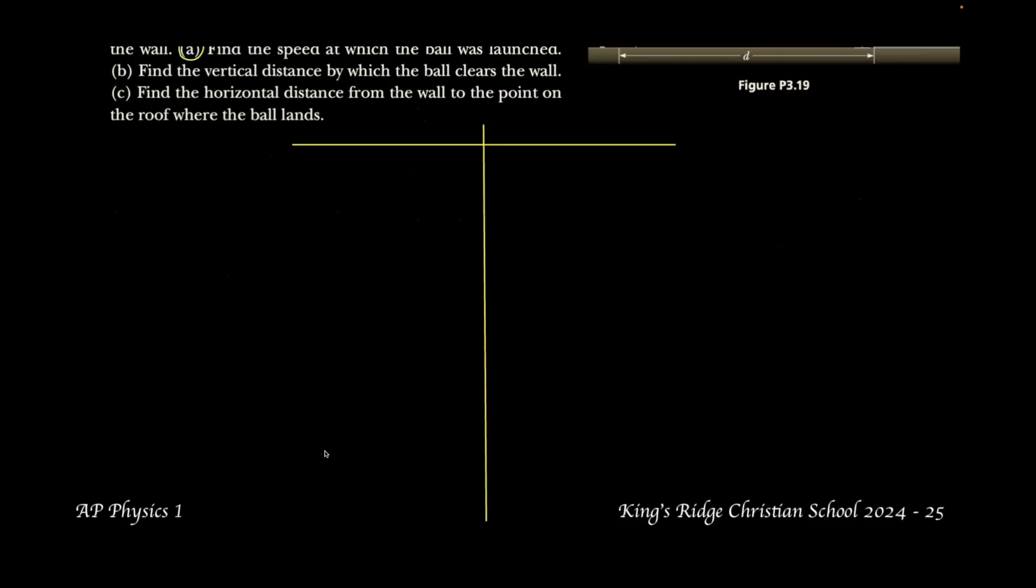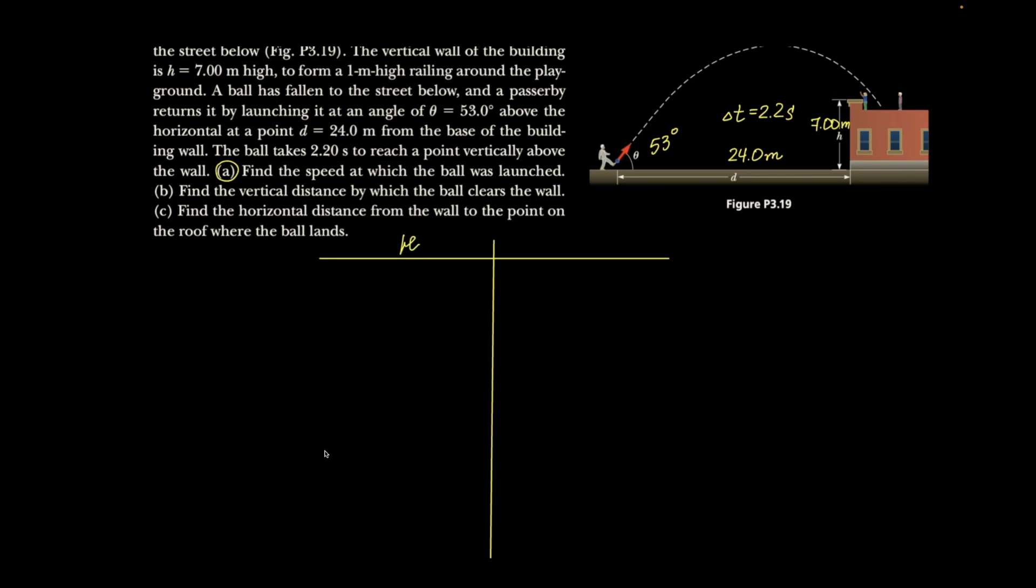How are we going to find Vx? So we know horizontally that Vx is going to be V0 times cosine of 53. Vy initial is going to be that same V0 times sine of 53.